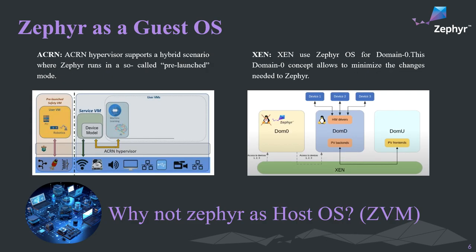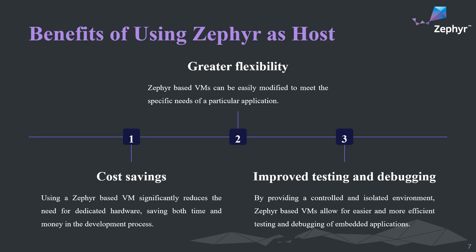In some technology sharing in past years, we learned that Zephyr, as a guest OS, has been deployed in various hypervisors such as ACRN, XEN, and KVM, where Zephyr acts as the control center and undertakes some single tasks. So we started thinking: why can't we use Zephyr as the host OS, like Linux KVM does? In our opinion, using Zephyr as the host OS has advantages including better resource savings, better scalability, and better testing and debugging. So we just did it.